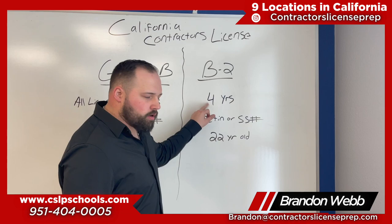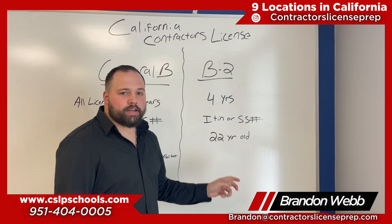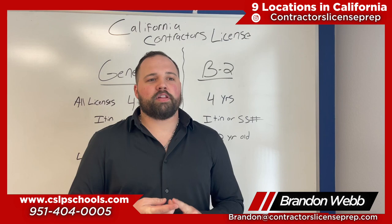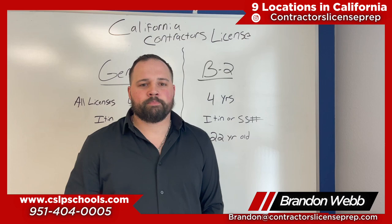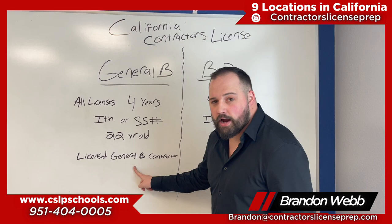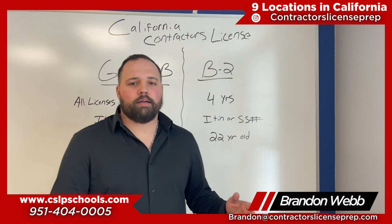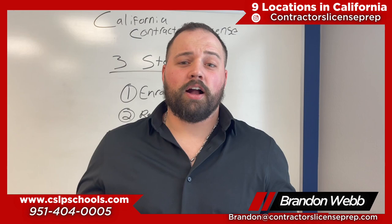As for the B2, it's the same qualifications: four years of experience in the trade, an ITIN or a social security number, and at least 22 years old. Now, with the signature for a B2, this can be a business associate — it does not have to be a licensed contractor. It helps, absolutely, but it is not required. A licensed general B contractor can sign off for a B2 as well, which is great, but it's not required.